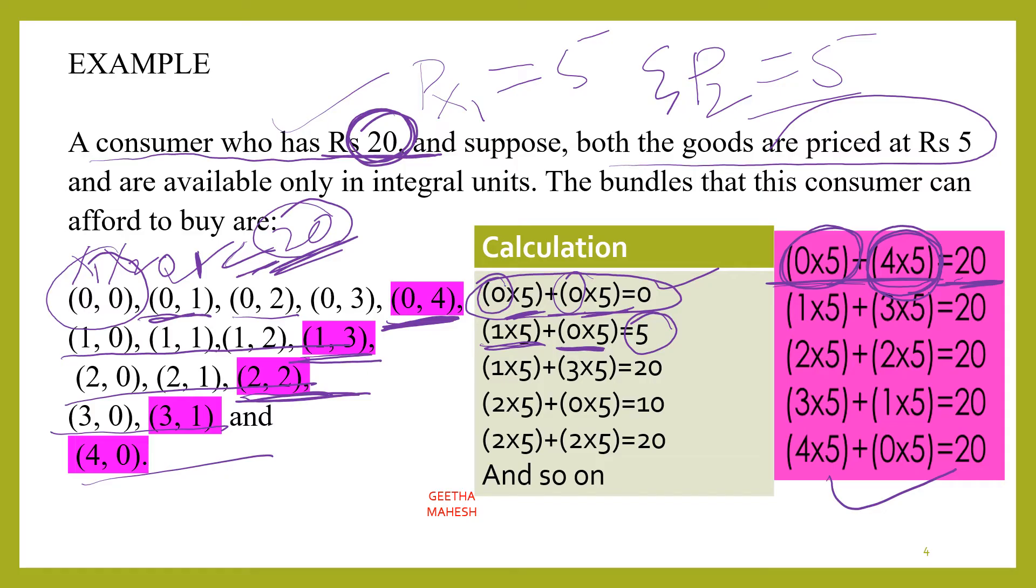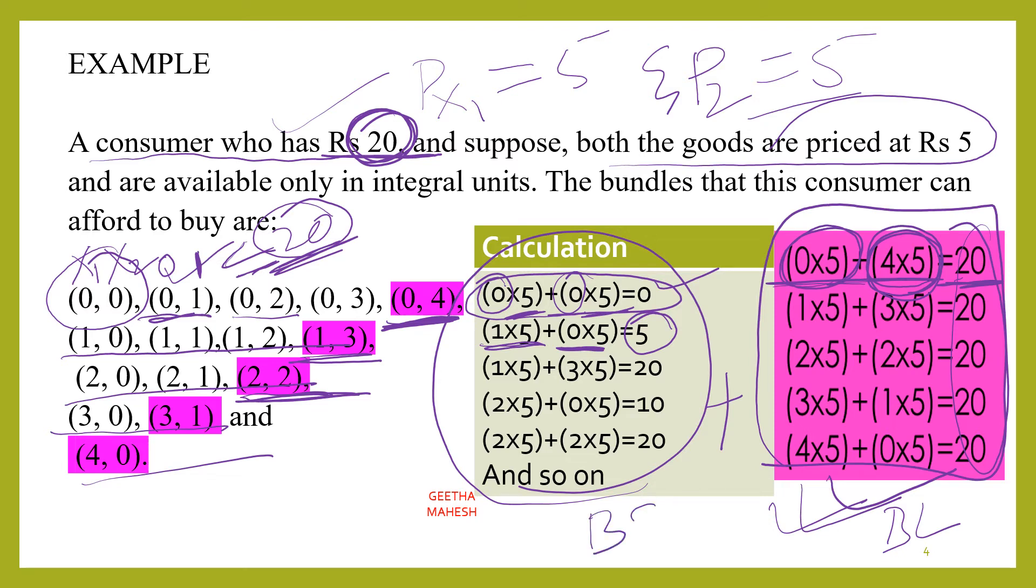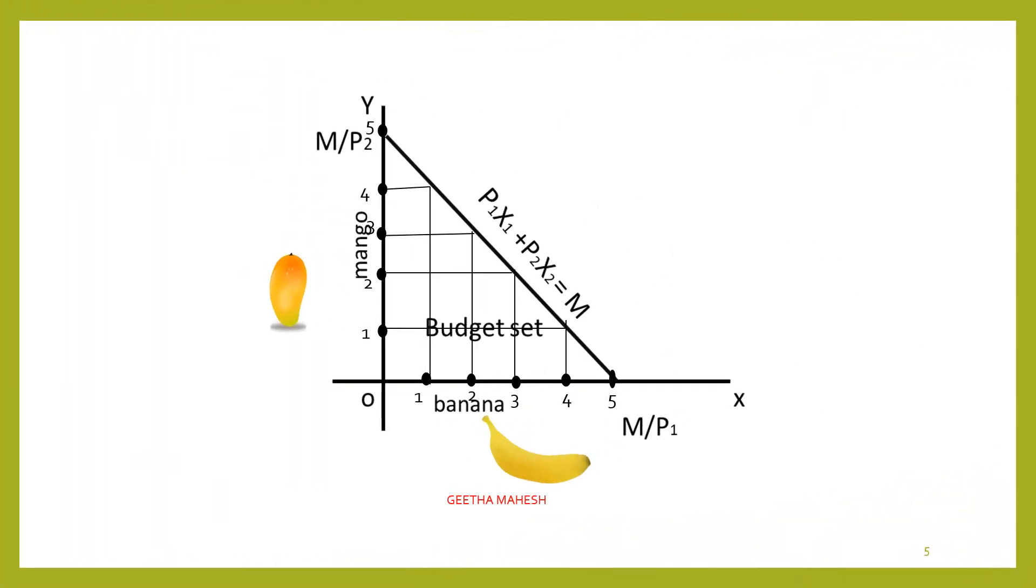Using different combinations, we calculate where the cost is equal to income - that is, equal to 20 rupees. All combinations where cost is less than or equal to consumer's income together form the budget set.